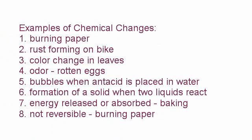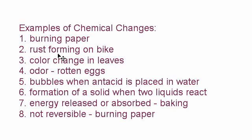Here are some keywords that help you identify whether a chemical change is occurring. One key word is burning — whenever you're burning something or dealing with fire, that's most likely a chemical change. If you burn a piece of paper, it turns into ash, and ash is not the same thing as paper — those are two different compounds. Similarly, when you cremate someone they turn into ash, which is a chemical change. Rust is another example — leaving your bike outside causes rust to form.